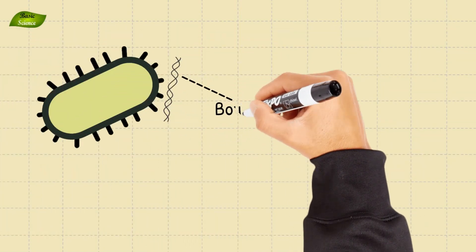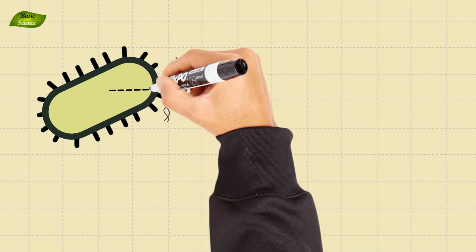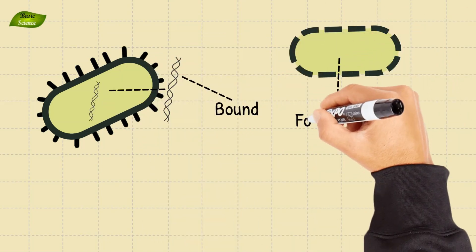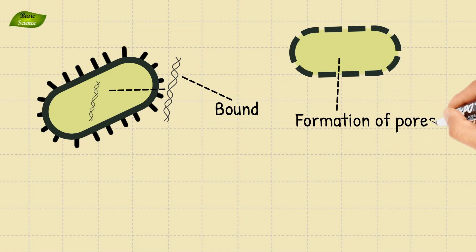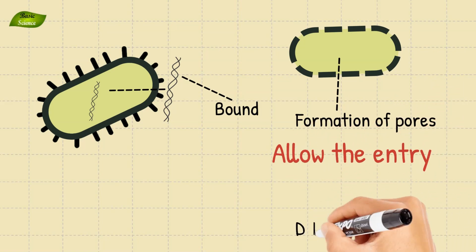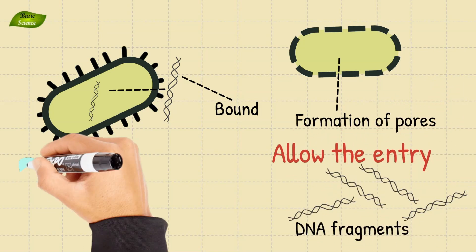Once bound to the bacterial cell surface, the DNA is transported into the bacterial cell. This process involves the formation of pores in the cell membrane to allow the entry of foreign DNA fragments.